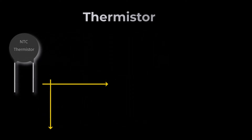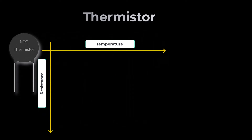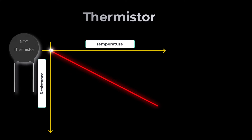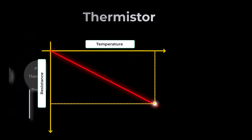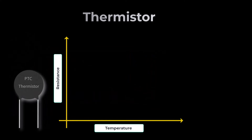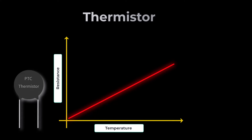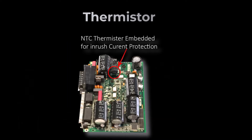Most thermistors fall into two categories: NTC and PTC. NTC thermistors have resistance that decreases as temperature increases — they are commonly used in applications requiring higher sensitivity to temperature changes. PTC thermistors have resistance that increases with temperature, and they are often used in applications like overcurrent protection in electronic circuits. Thermistors are widely used in electronic circuits for temperature sensing and control.